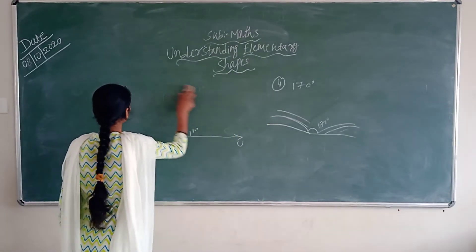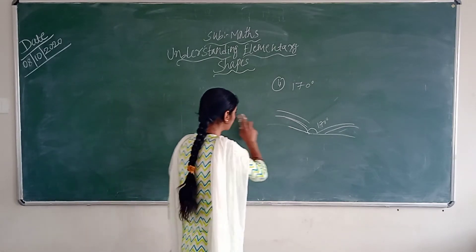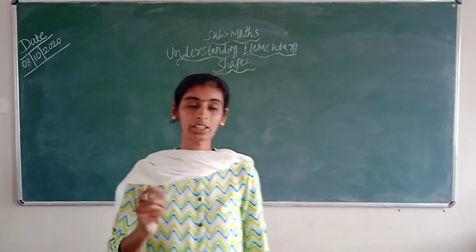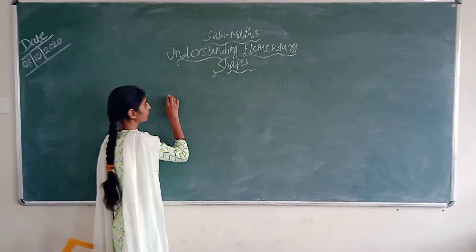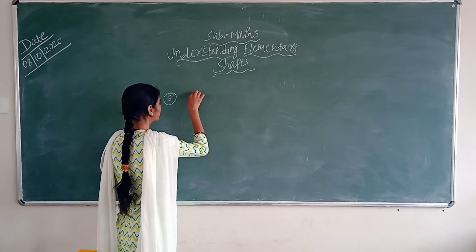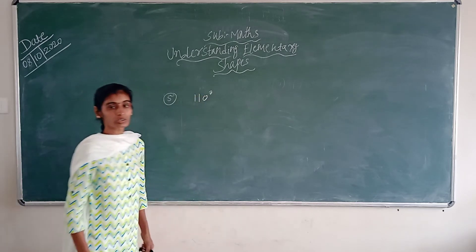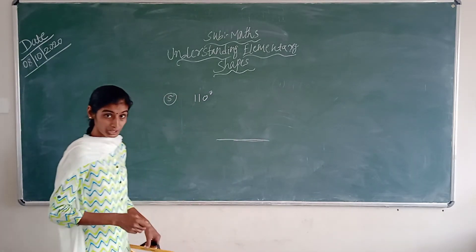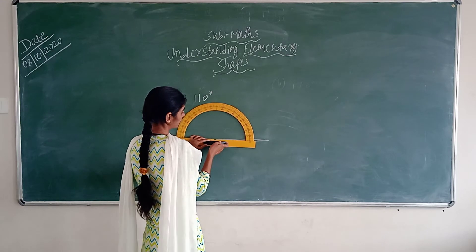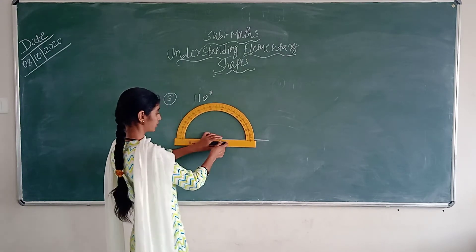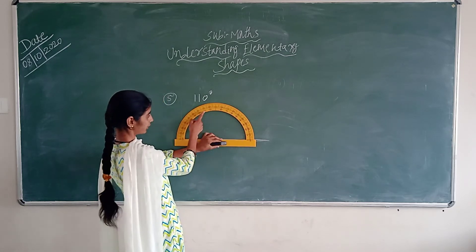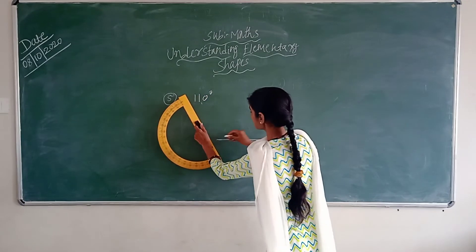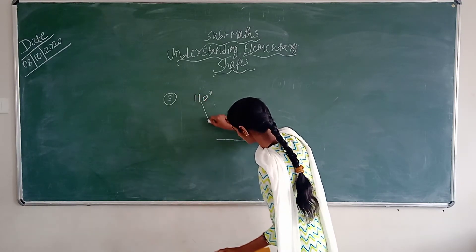Let us see one more example for the obtuse angle. So you can take any angle — any degree. But it should be more than 90 degrees and less than 180 degrees. So now you can take 110 degrees. So this is the line segment. Now if you want to measure, it should be 110. So likewise, you have to place your protractor like this. Then you have to see the lock side of it. Where is 110? Yes, you all can see here it is 110. So you have to mark here, then like this you are going to join the line.